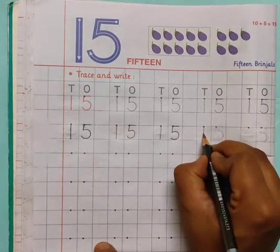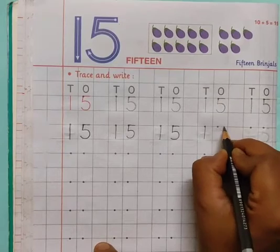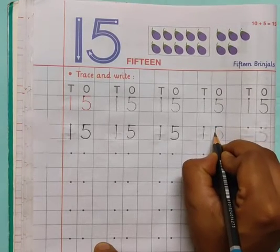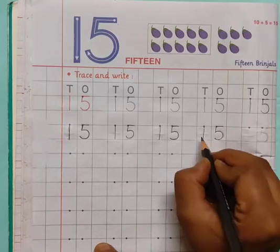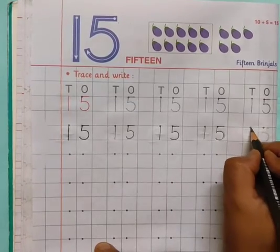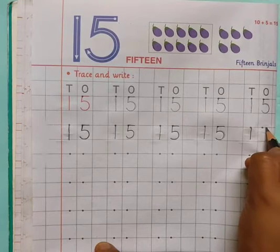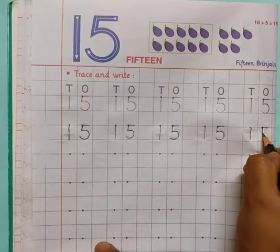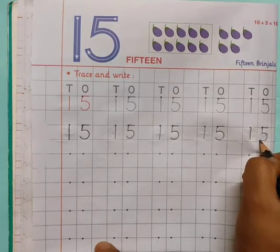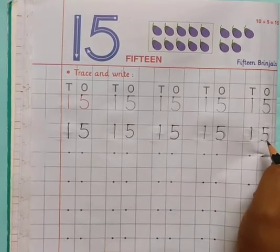Again repeat: standing line 1, sleeping line, standing line, curve. 5, 1, 5, 15. Again repeat: standing line 1, sleeping line, standing line, curve. 5, 1, 5, 15.